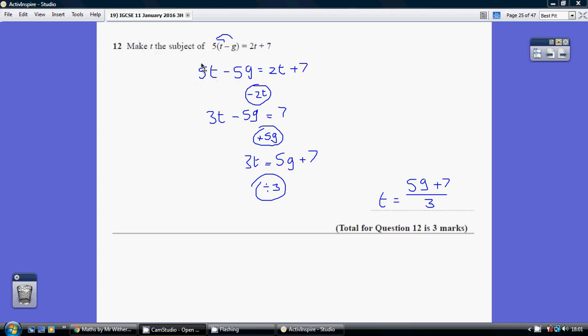Now, given the greater number of t's are on the left, let's aim to get all our t's on the left. So how do we undo an adding of 2t? We take away 2t from both sides. So taking away 2t, we get 3t minus 5g, which is unchanged, equals 7.